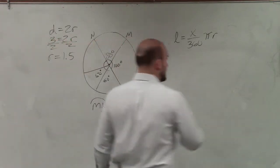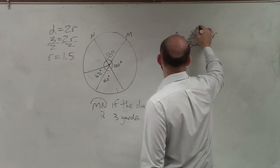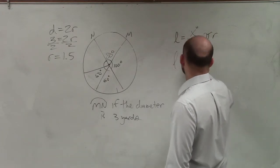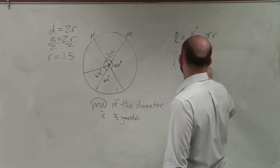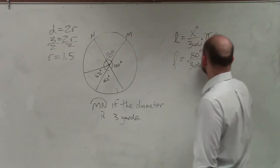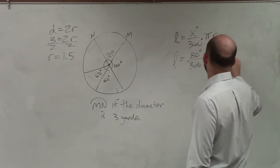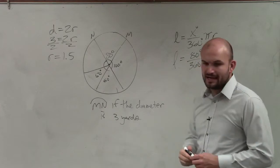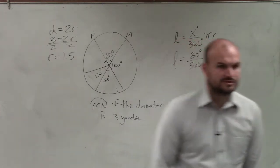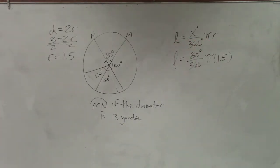Now I just plug in the information that I have. L equals 80 degrees over 360 times π times 1.5. You can easily simplify 80 over 360.